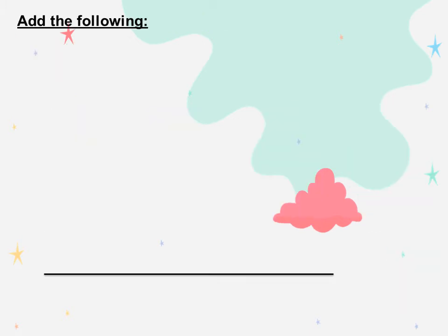Add the following. The first one: 7,992 plus 2,101. Ones with ones: 2 plus 1 equals 3. 9 plus 0 equals 9. 9 plus 1 equals 10, so we will write 0 and carry up 1. 1 plus 7 equals 8.